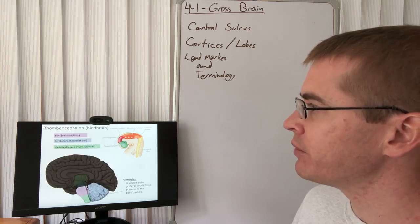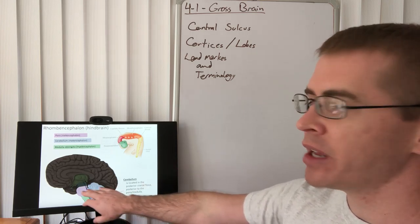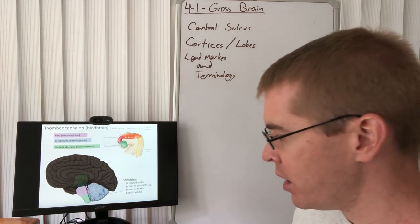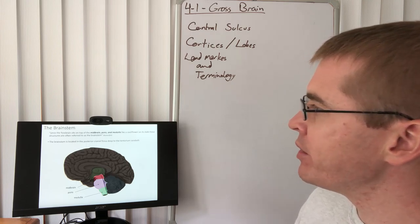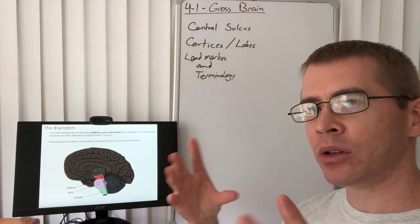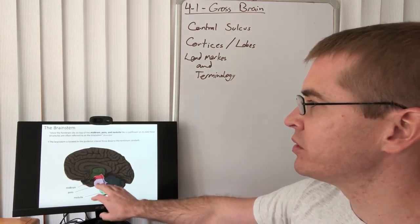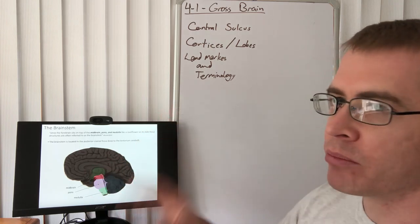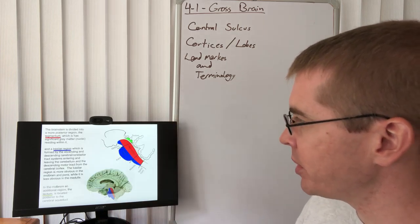So now moving into the rhombencephalon, the hindbrain forms the pons, the cerebellum posteriorly connected to the pons, and then the medulla oblongata below that, which is continuous with the spinal cord. So anyway, the brainstem is called the brainstem because somebody thought that it looked like cauliflower on top of a stalk. So brainstem is the stalk that connects the flowering portion of the brain to the spinal cord.